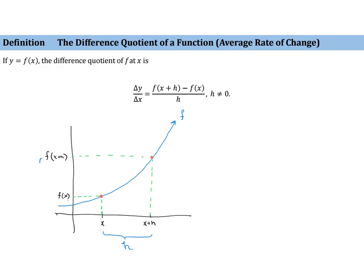So what is delta y? Delta y is going to be the difference of those two: y2 minus y1, or f of x plus h minus f of x. Delta x is the distance between these two x values, which is just h. So we can find the difference quotient, which is a way to talk about the average rate of change of a function.